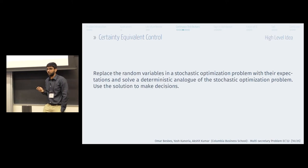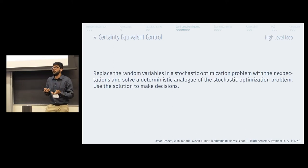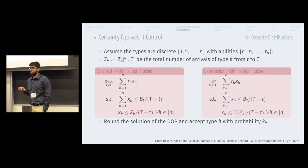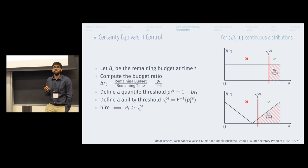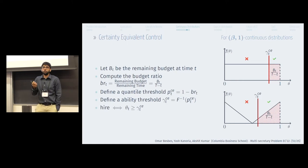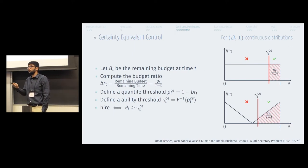So what is the certainty equivalent control? Think of it as solving a stochastic optimization problem. Since you don't know the realization of random variables, you replace all random variables by their means, solve that deterministic analog, and use that solution to make decisions. For discrete distributions, you solve an LP and use the deterministic solution. For the beta-1 continuous distribution, the prescription is simple: at time t, with a remaining budget of b_t, you compute a budget ratio — the ratio of remaining budget to remaining time. This gives you a threshold, and you hire if the ability exceeds the threshold, otherwise you reject.